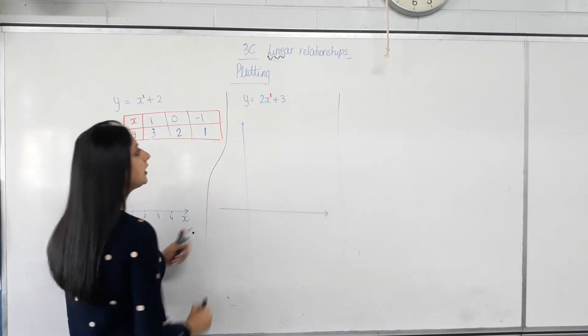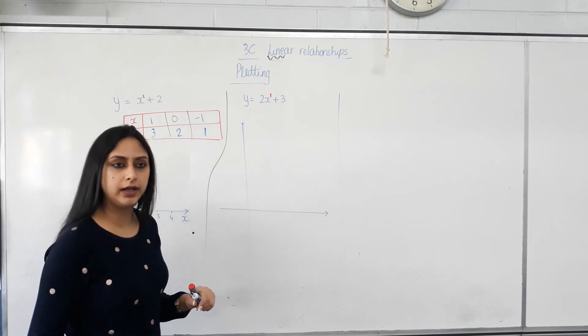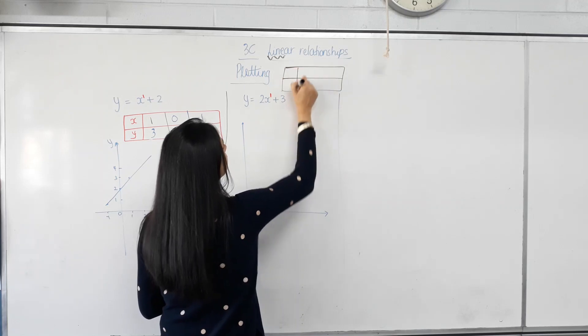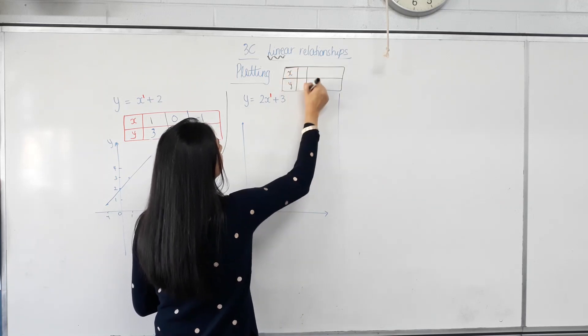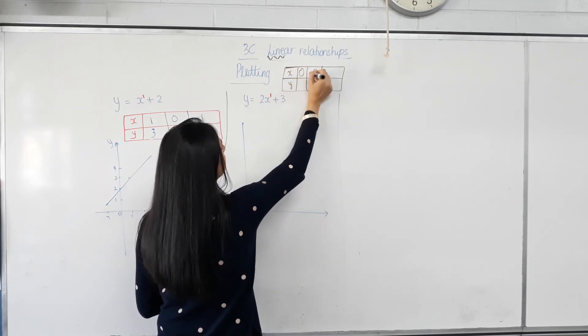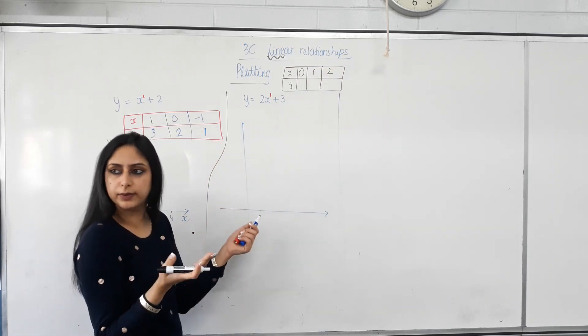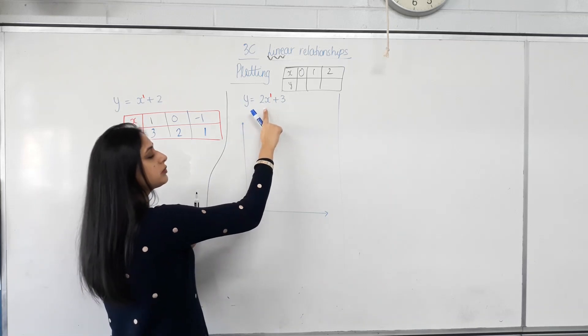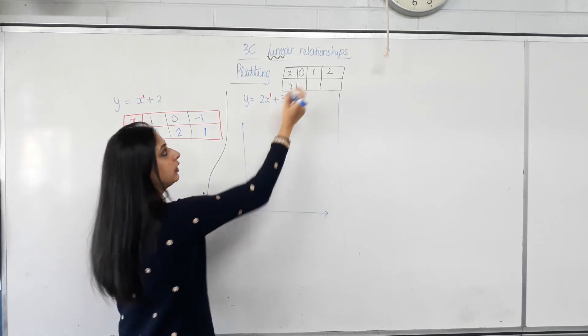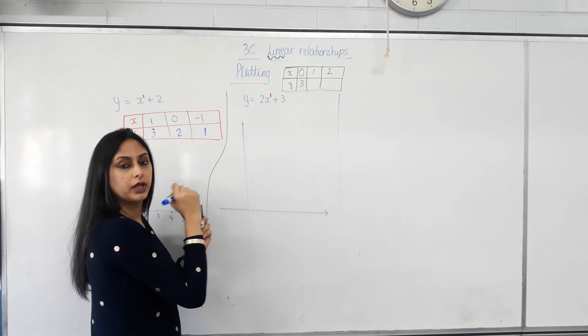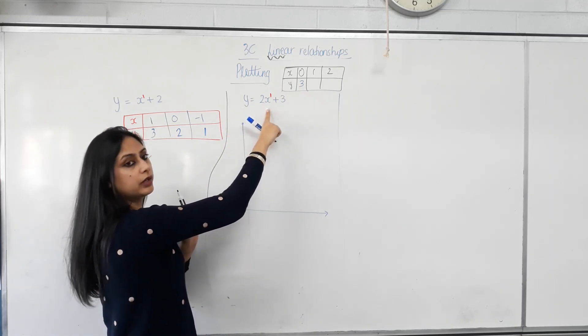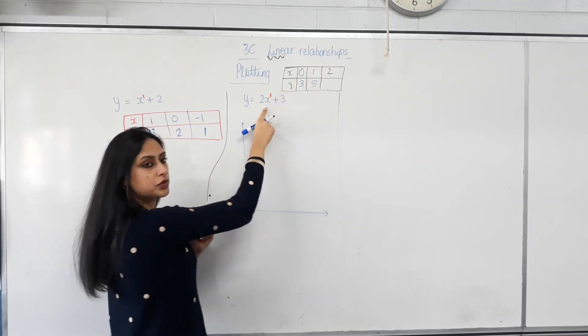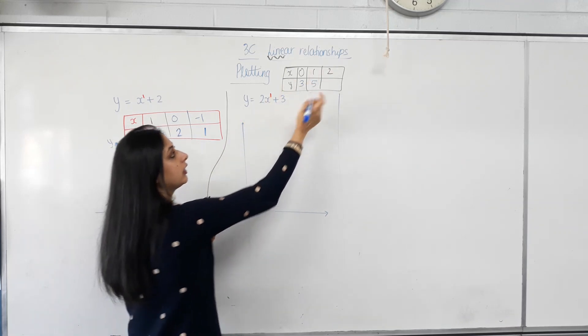This one. Again, is this a relationship between x and y? Yes. Let's get some values. I'm just going to choose 0, 1 and 2. Can I choose whichever ones I like? Yes. So if x is 0, what's 2 times 0? Plus 3. If x is 1, what's 2 times 1? Plus 3. If x is 2, 2 times 2? Plus 3. All right.